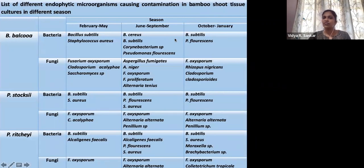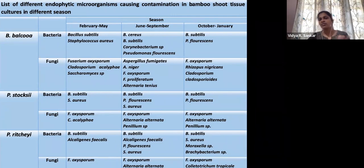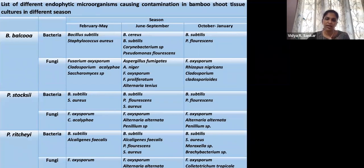This is a list of the endophytes isolated from three different bamboo species: Bambusa balcooa, stocksii, and ritchiei. From this list, we can find the presence of Serratia marcescens and Bacillus subtilis throughout the year regardless of season.